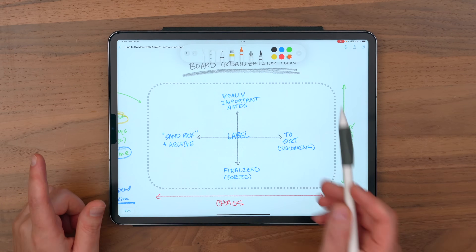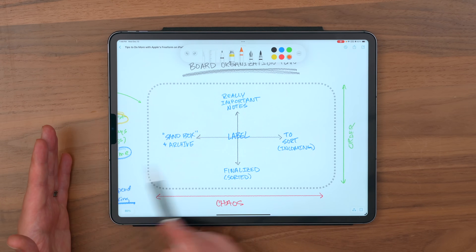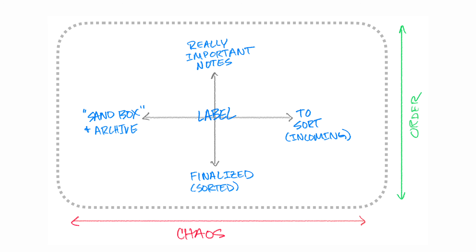I keep it sparse up there, and it's sort of just my instructions or directions or focus for the board to keep myself on track. And I want you to notice — this is really interesting — the way that I've ended up setting this up is that the x-axis ends up being the chaotic side of things. My sandbox and things to be sorted all live on this horizontal line.